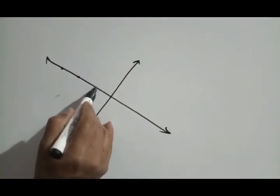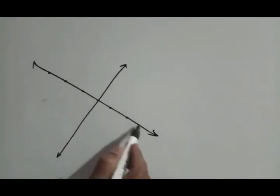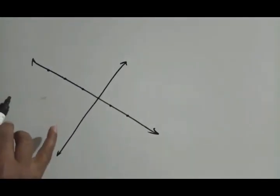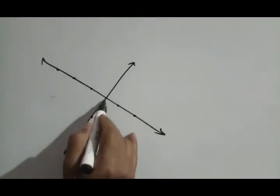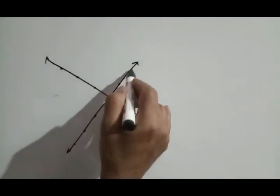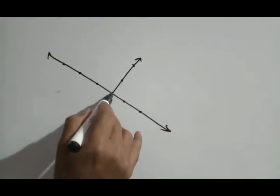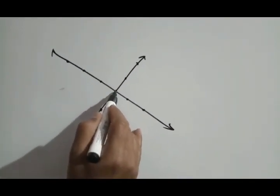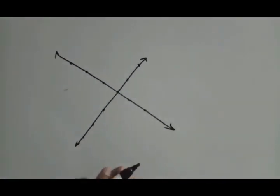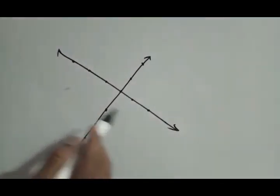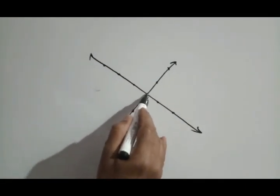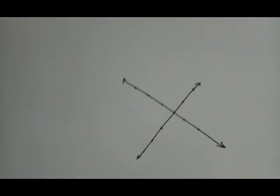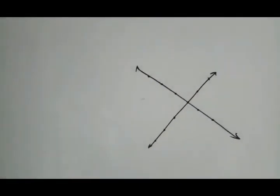When the two lines are intersecting, we say there is a common solution, because every point on the first line is a solution and every point on the second line is also a solution. There is a common point, and the coordinates of this point will be satisfying both the equations. Therefore the coordinates of this point of intersection gives the solution of the pair of linear equations in two variables.